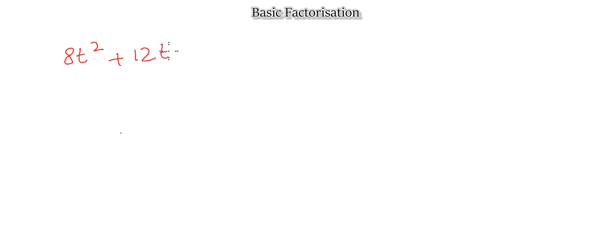Now let's try 8t² + 12t. Looking at the numbers, 8 and 12 share a highest common factor of 4. Looking at the variable, t appears in both terms — though one is t² and the other is t, so we take out just t. That gives us a common factor of 4t outside the bracket.